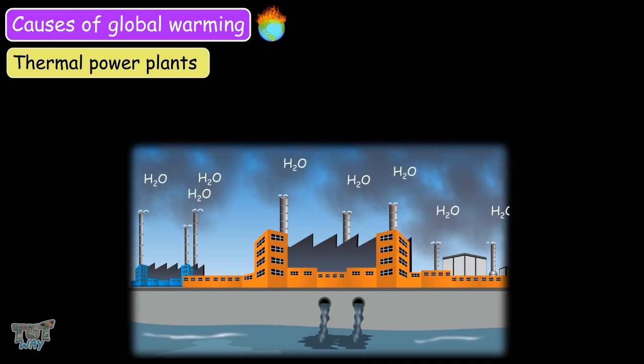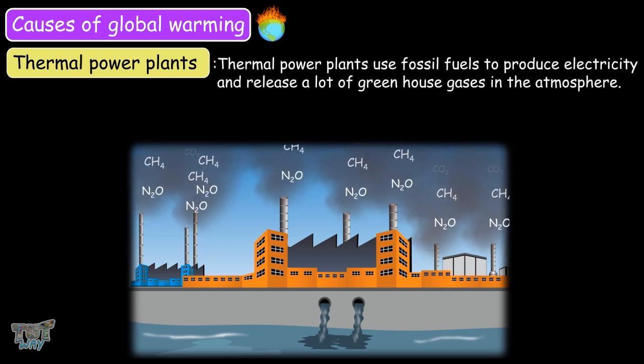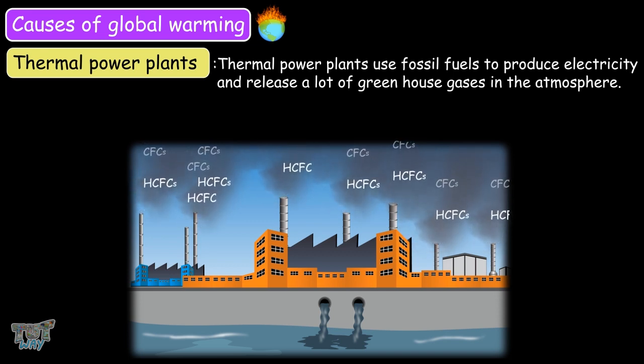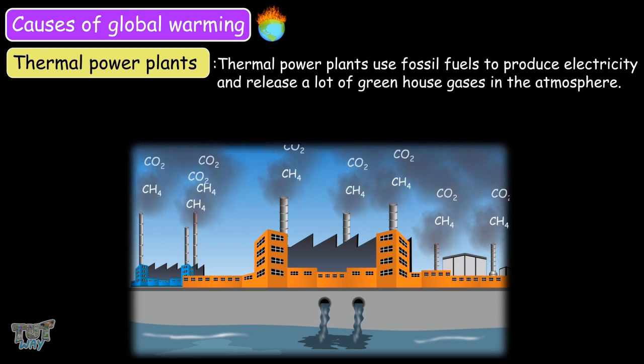Thermal power plants use fossil fuels to produce electricity, and as the demand for electricity is continuously growing, a huge number of power plants are being set up, which leads to an excess release of greenhouse gases into the environment.